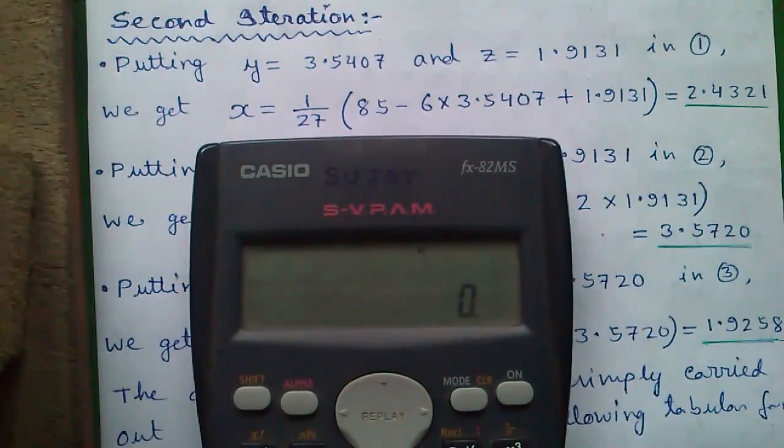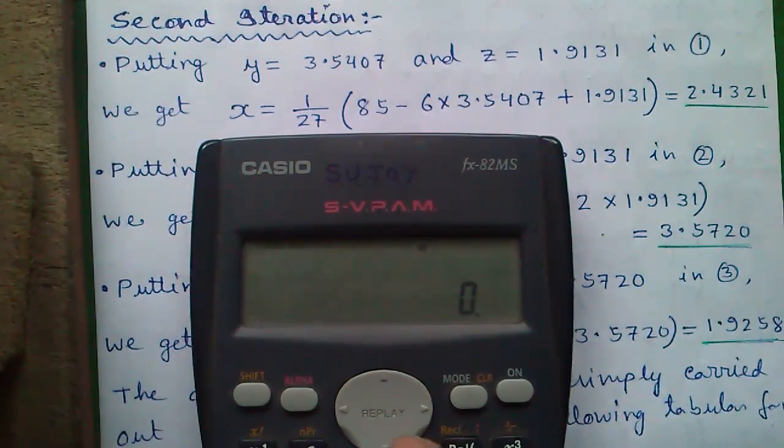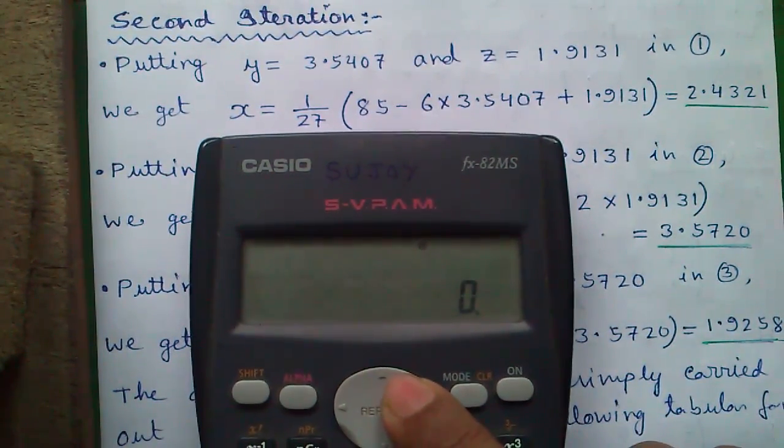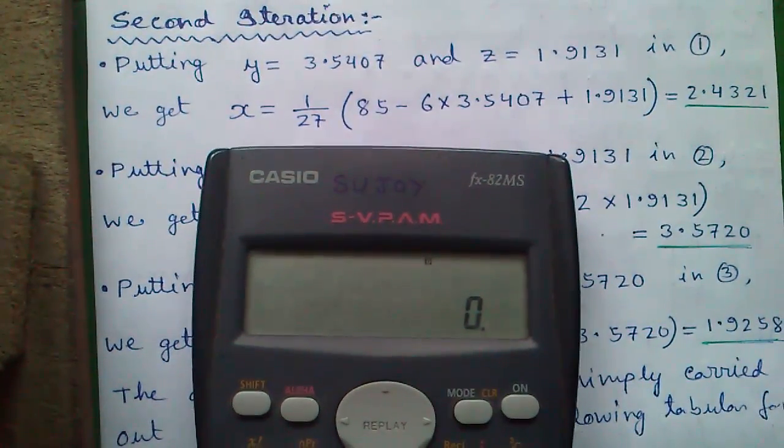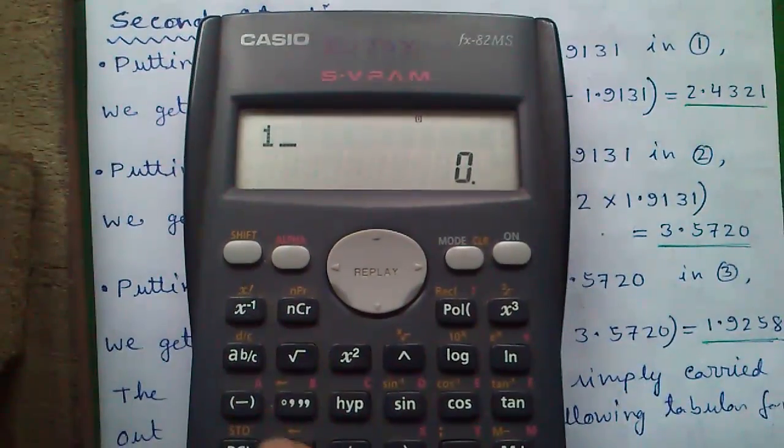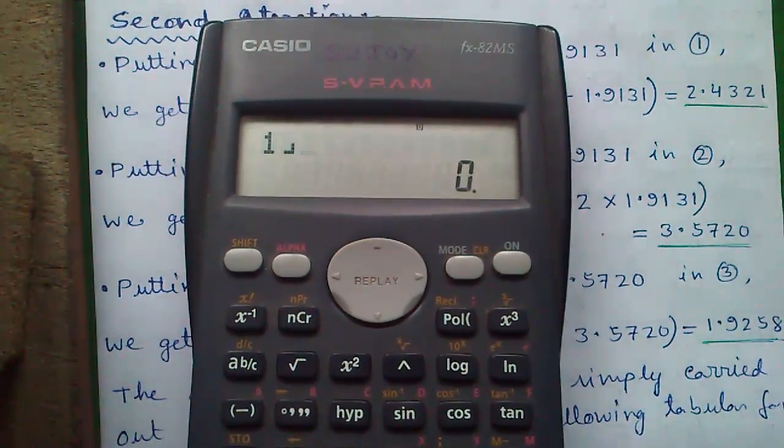Calculations you performed on FX-911ES you can also perform on FX-82MS. How? I will show you. I will calculate this 1 by 27. Press 1 and for fraction press a by bc button, 27, times 85.